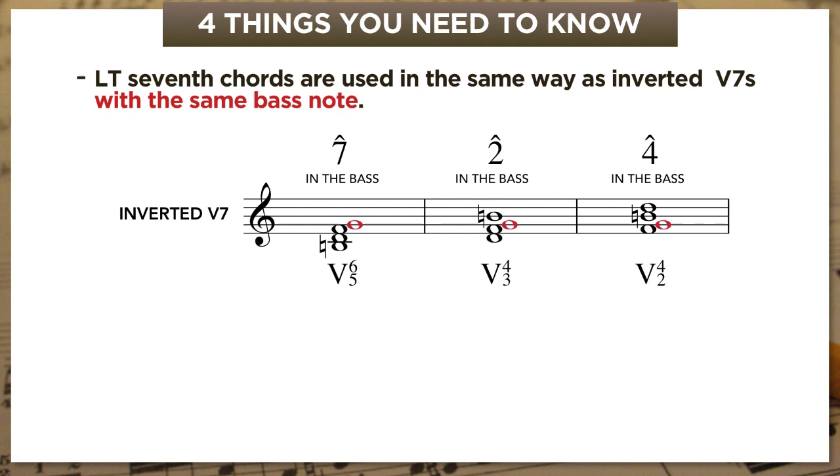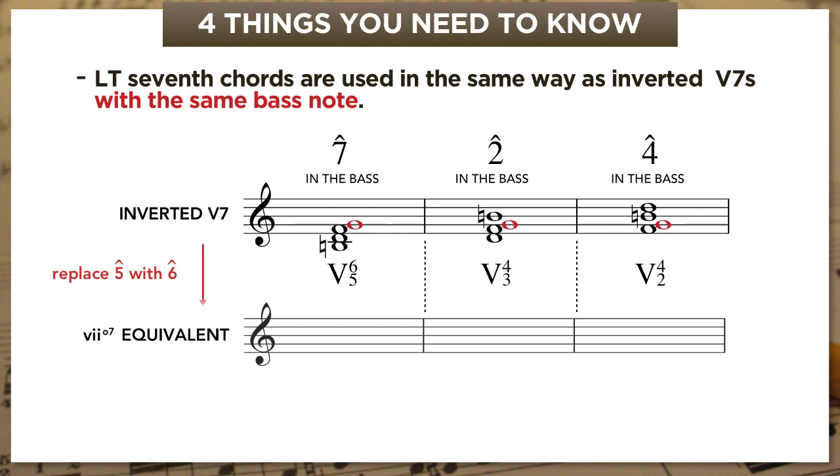And to turn any of these chords into its 7 diminished 7 equivalent, all we have to do is replace scale degree 5—which I've shown here in red—with scale degree 6. So, starting with V6-5, if we take V6-5 and move its root—the red G—up by step to Ab—we now have 7 diminished 7, which has the same bass note and the same function as V6-5. So everything we know about how V6-5 gets used also applies to 7 diminished 7. It doesn't matter that the chords have different roots—it doesn't matter that they're technically in different inversions—what matters is the same bass note and the same function.